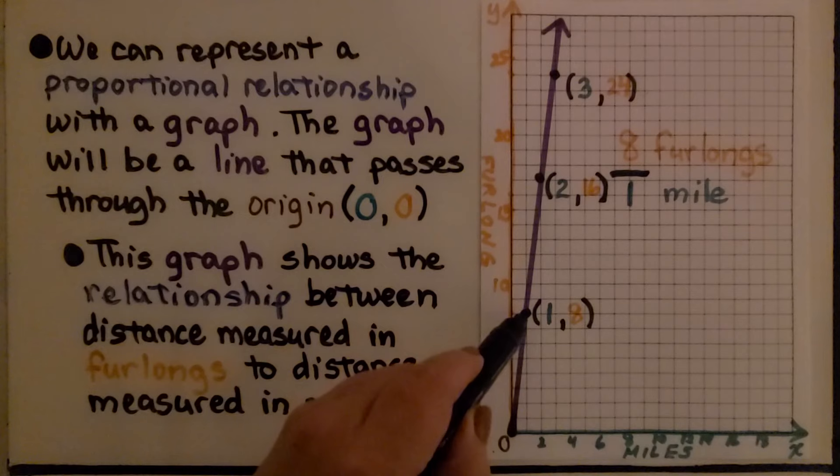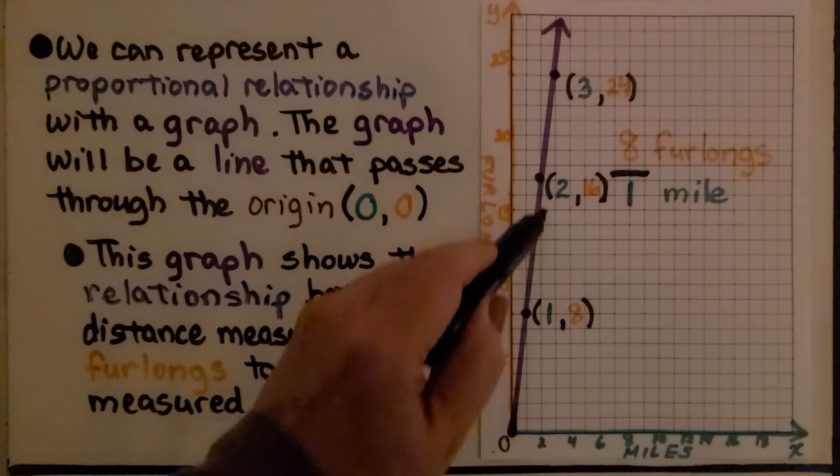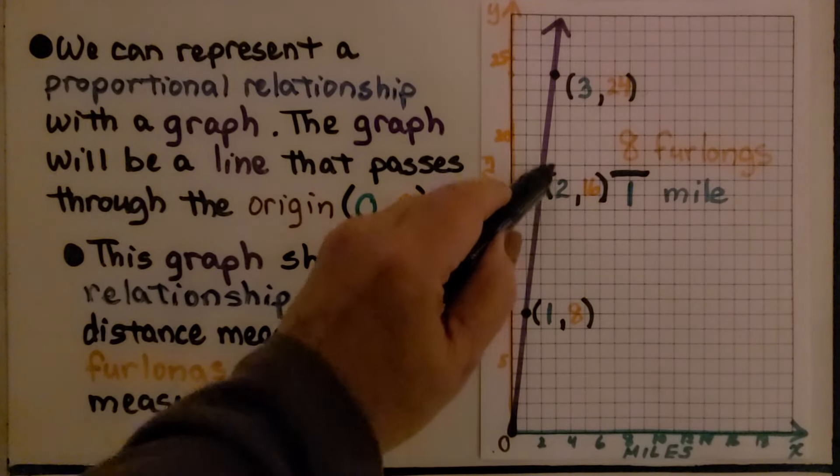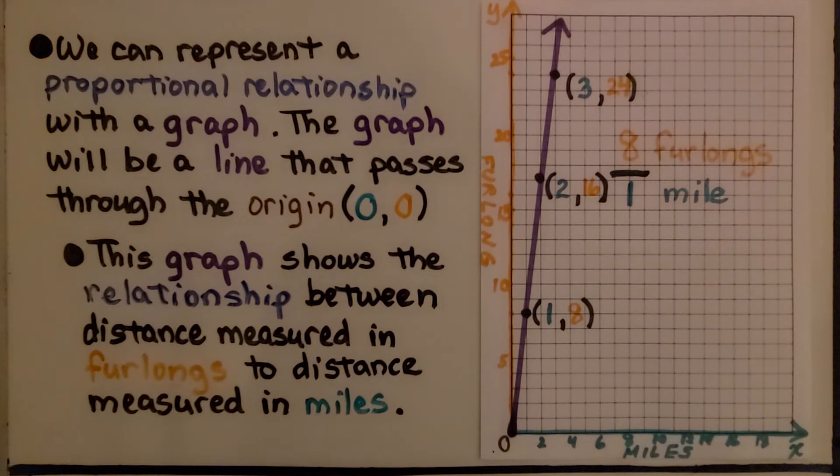Then we have 1 mile, 8 furlongs, 2 miles, 16 furlongs, 3 miles, 24 furlongs. They're all in proportion to each other.